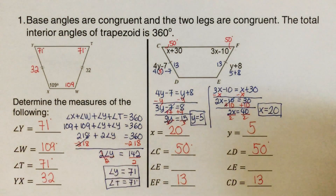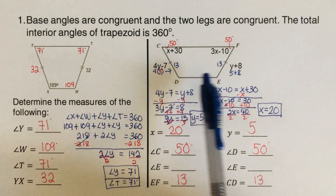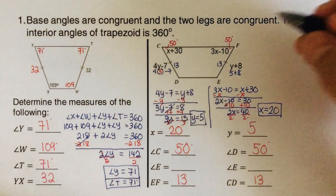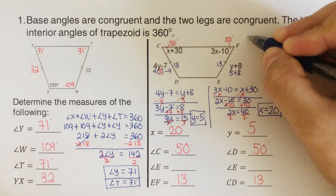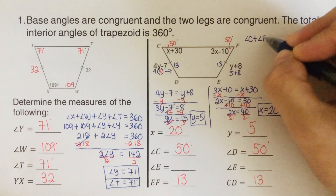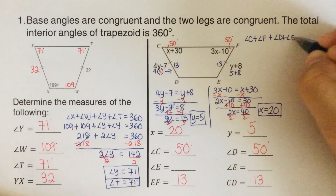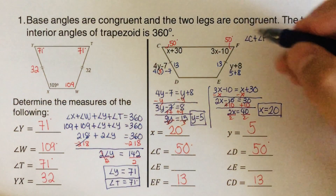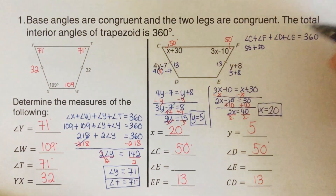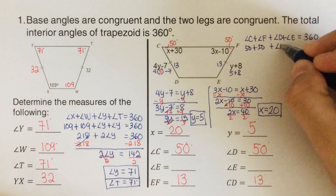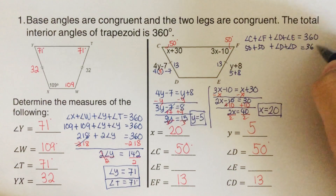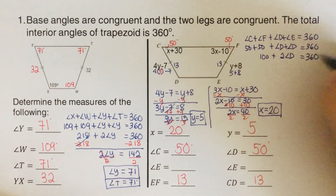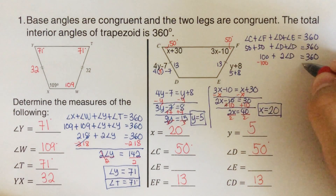Now we solve for angles D and E. Since angle C and angle F are both 50 degrees, we set up: 50 plus 50 plus angle D plus angle D equals 360. That gives 100 plus 2·angle D equals 360. Subtracting 100 from both sides gives 2·angle D equals 260, so angle D equals 130 degrees.